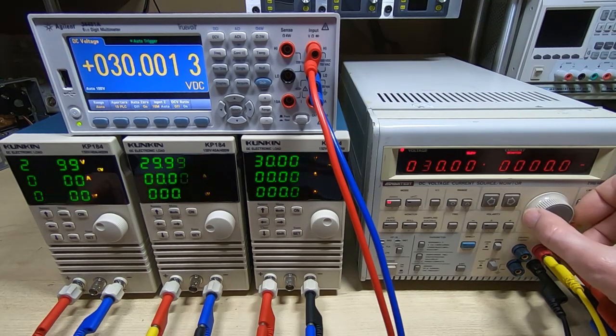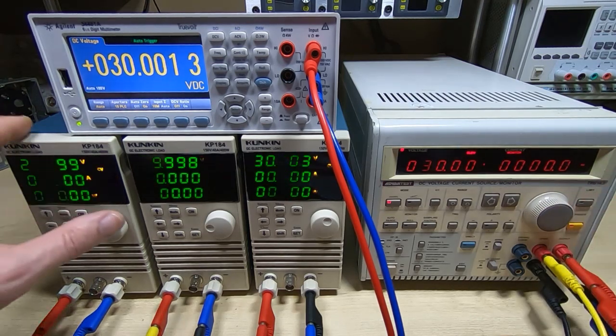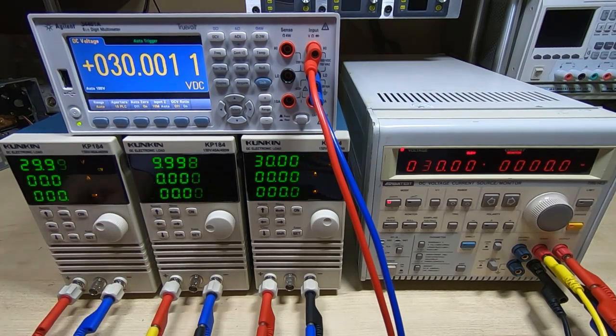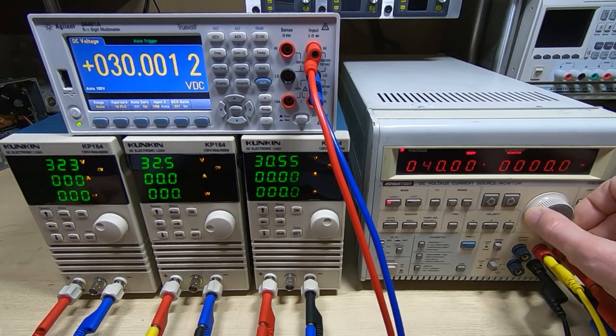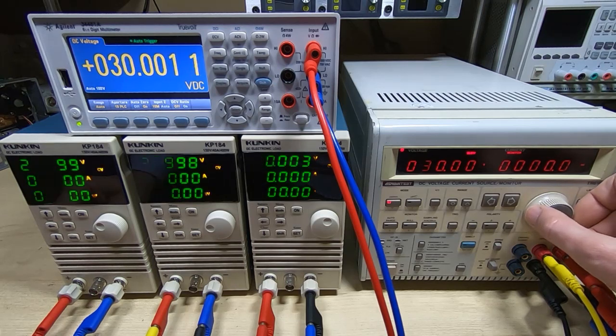As you can see they're now all three reading very close together as opposed to what I had before which was quite a discrepancy between them. It wasn't terrible before, maybe 50 millivolts, 70 millivolts, something like that. But now we're within about 10 millivolts or so. That's more than adequate for what I need these for.